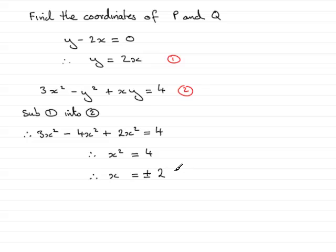All I need to do now is substitute plus 2 and minus 2 into number 1, and it will give me the corresponding values of y. So when x equals 2, we can see that y equals 2 times 2, which will be 4. And similarly, when x is minus 2, we get that y equals 2 times minus 2, in other words, minus 4.